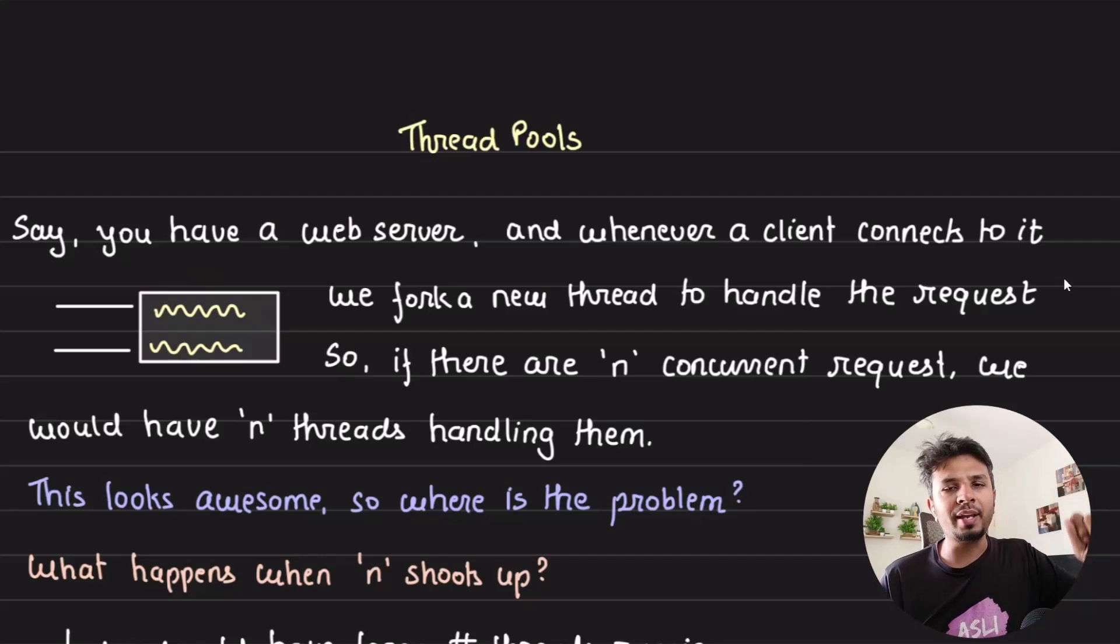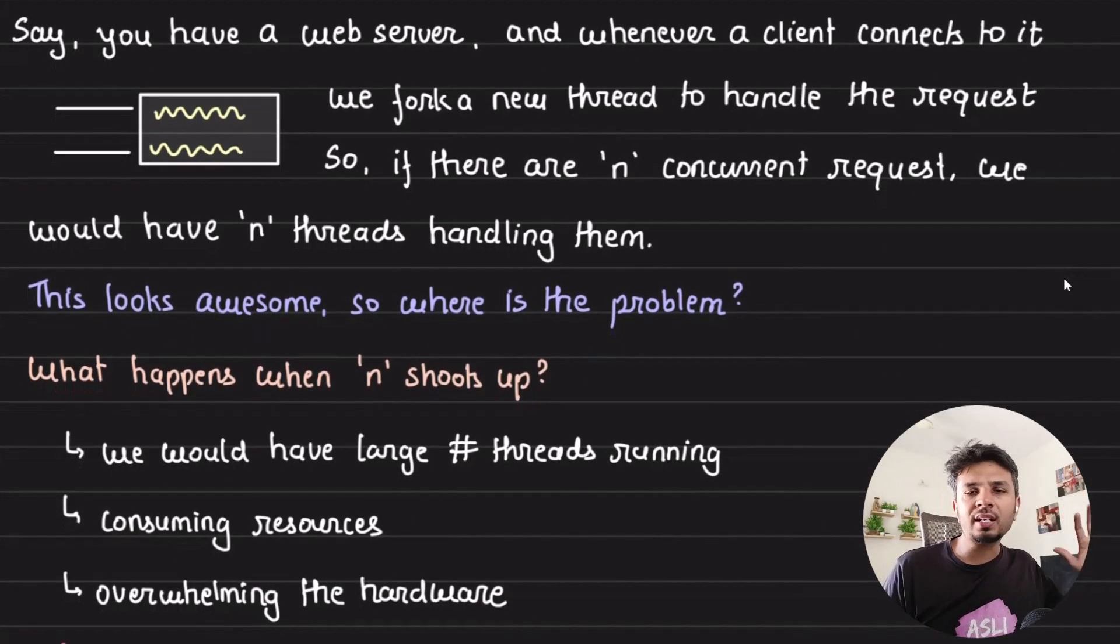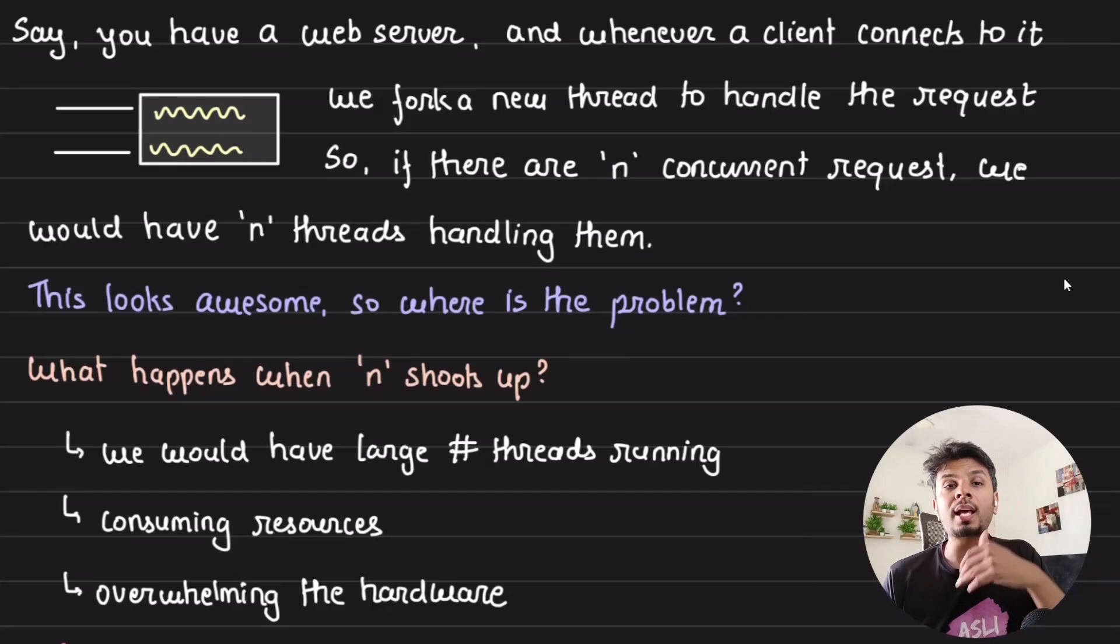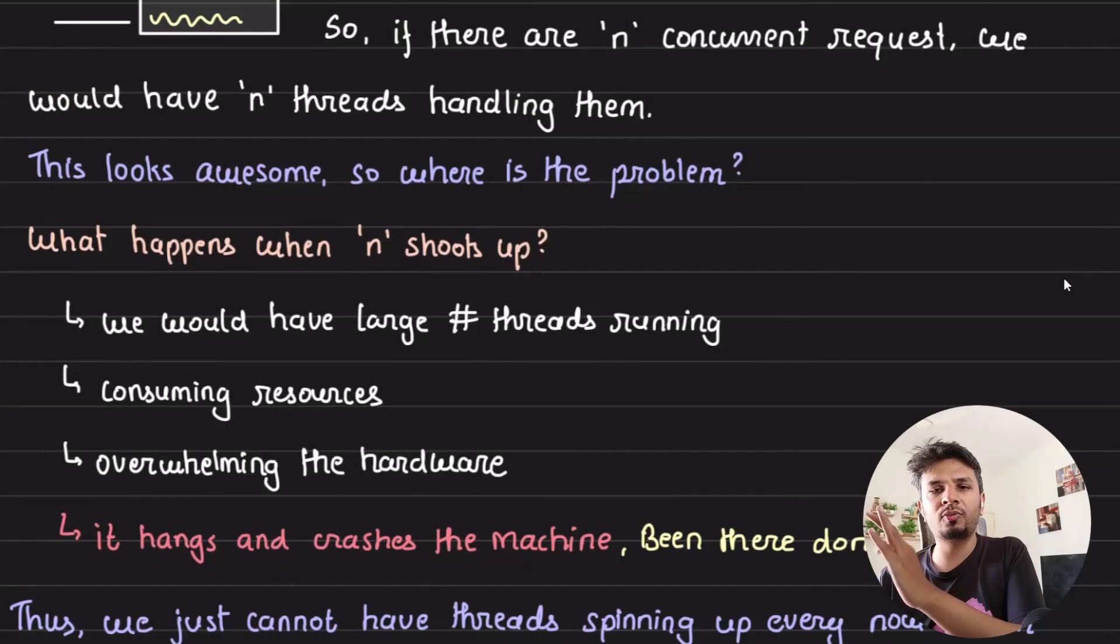But what if n shoots up? What if we get a very large number of requests coming in? What happens when we have an extremely large number of threads? This is where things would start to falter.